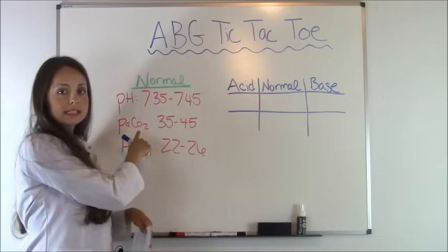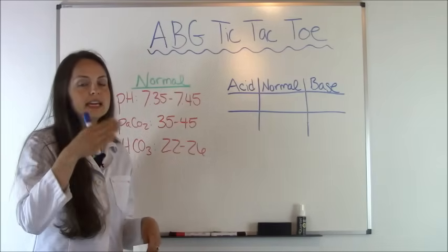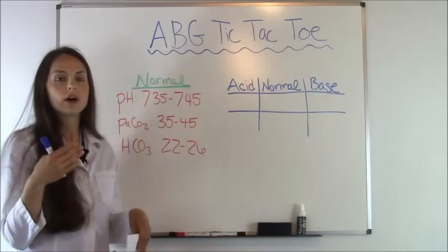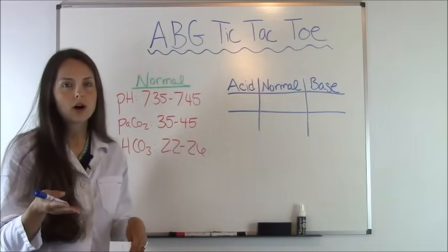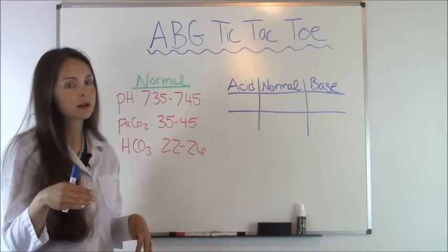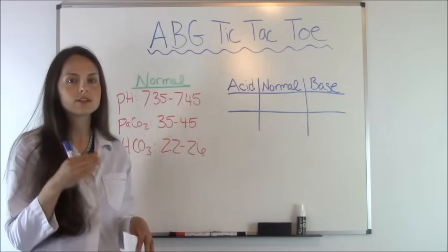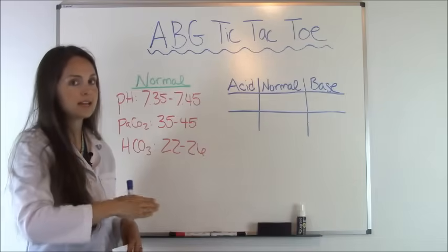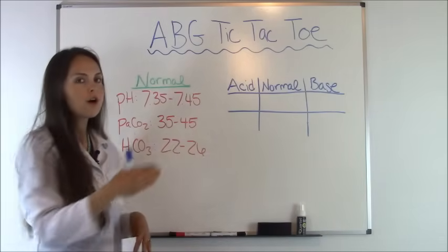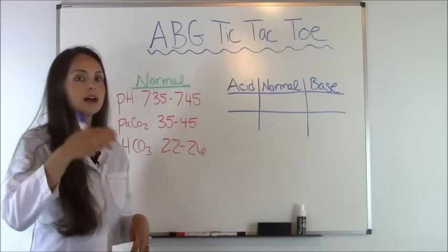For the PaCO2, this represents your respiratory level. It's the opposite of what the pH and HCO3 are. This a lot of times throws people off, so just remember PaCO2 is opposite and it represents your respiratory. For instance, anything less than 35 is basic, so it's alkalotic. Anything over 45 is acidotic, so it's an acid.